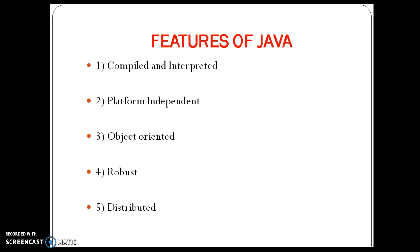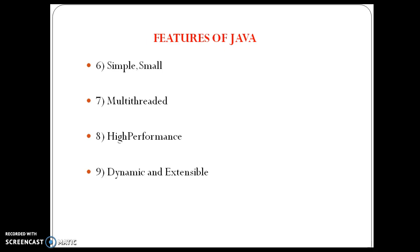The next feature is simple and small. Java is a simple language to practice. Many features of C and C++ that are not required are removed in Java — for example, Java does not use pointers, preprocessor header files, or goto statements. It also eliminates operator overloading, multiple inheritance, and virtual functions. Java is also a familiar language because C and C++ programmers don't find it difficult to learn Java, as it shares similar concepts like data types and control structures.